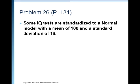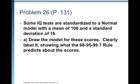Some IQ tests are standardized to a normal model with a mean of 100 and a standard deviation of 16. Draw the model for these scores. Clearly label it, showing the 68, 95, 99.7 rule, showing what the 68, 95, 99.7 rule predicts about the scores.